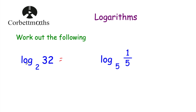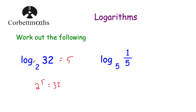This time we've been asked to work out log to base 2 of 32. What power would you raise 2 by to get to 32? Well, 2 to the power of 5 is equal to 32, because 2 times 2 is 4, times 2 is 8, times 2 is 16, times 2 is 32. So the answer would be 5 — log to base 2 of 32 is equal to 5.